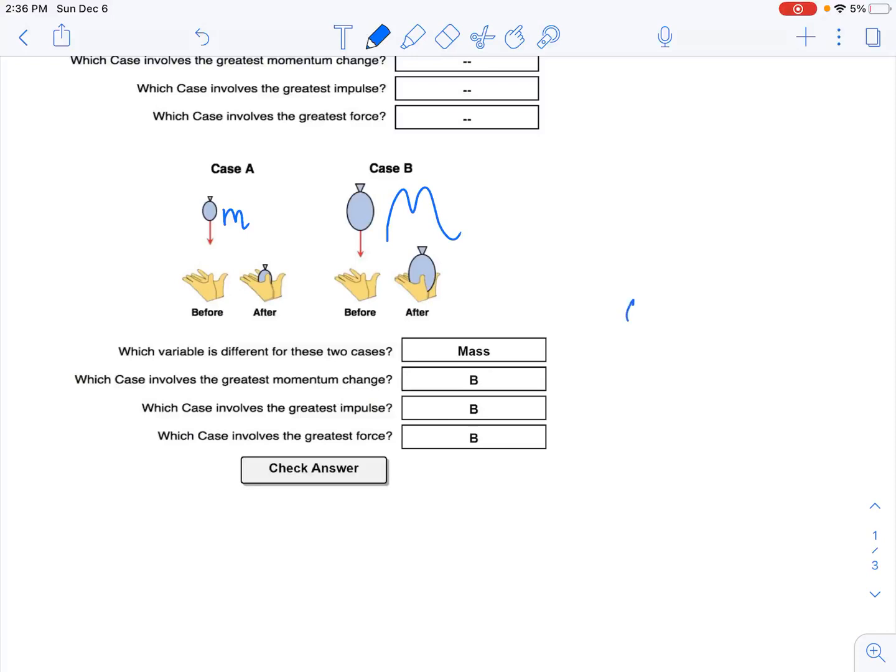So if we have a small water balloon being caught and then the larger water balloon, and we know the mass is larger for the big guy, which case involves the greatest change in momentum? So they both have the same change in velocity, right? They're both hitting the hands at eight meters per second and then come to rest. The difference is the mass. You can see right there that B, balloon B, is a larger change in momentum.